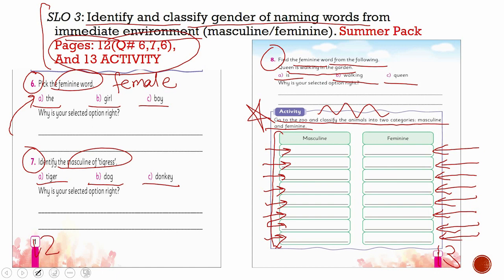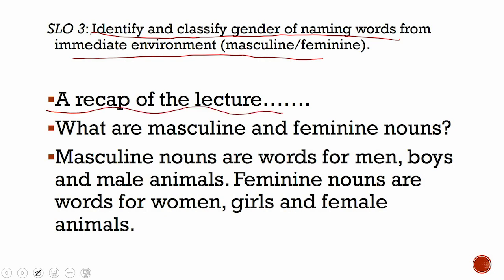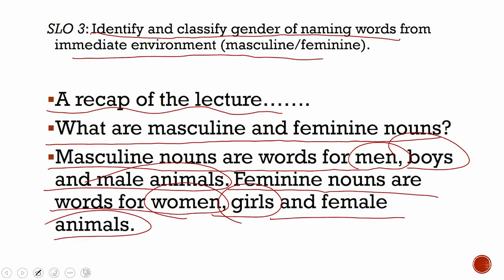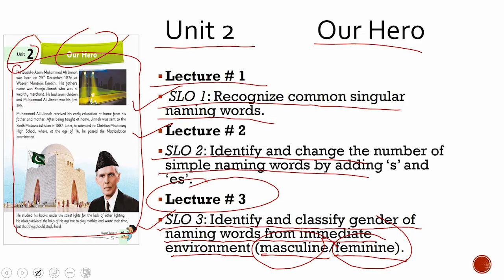Let's have a recap of the lecture — identify and classify gender naming words from the immediate environment. Masculine nouns are words for men, boys, and male animals. Feminine nouns are words for women, girls, and female animals. As a home task, read page number 9 of your textbook and try to find and circle the masculine and feminine words.